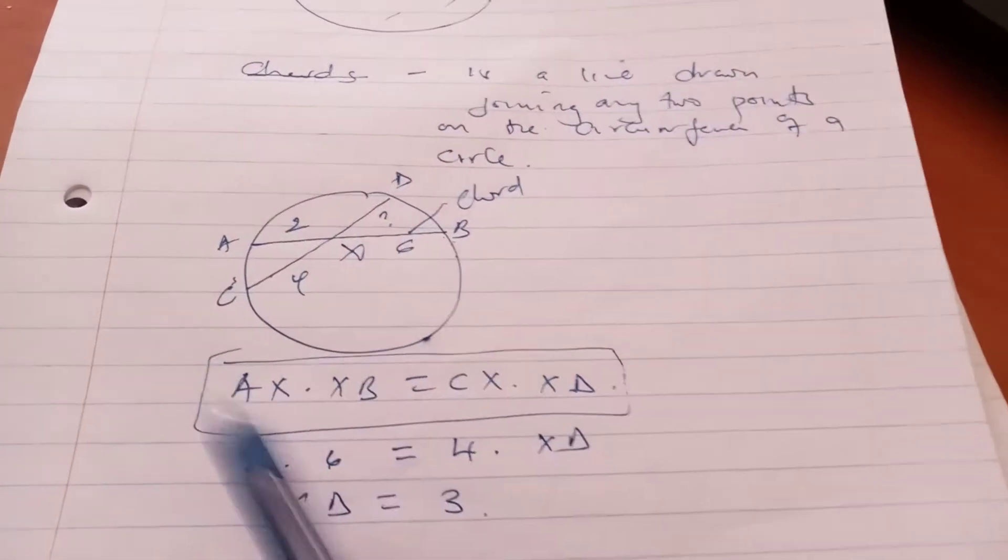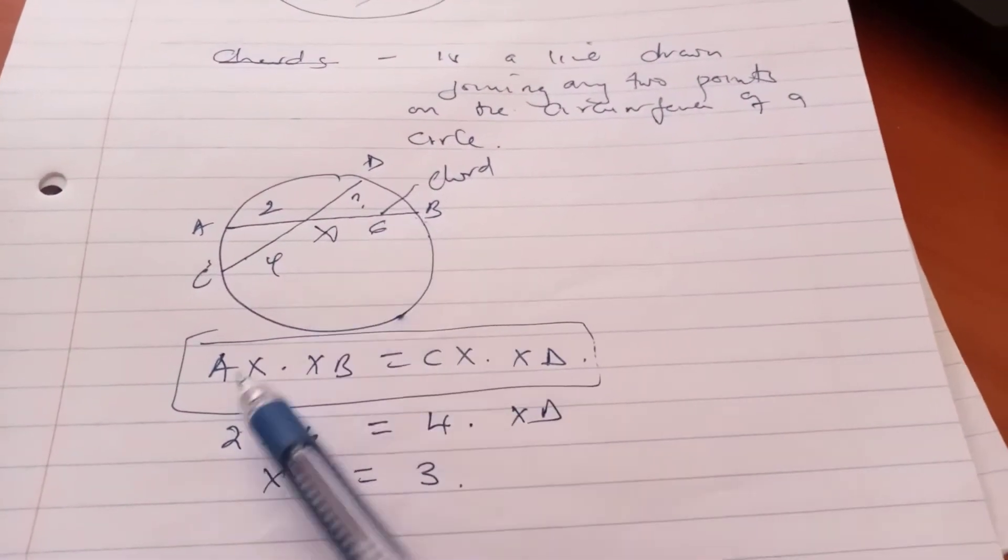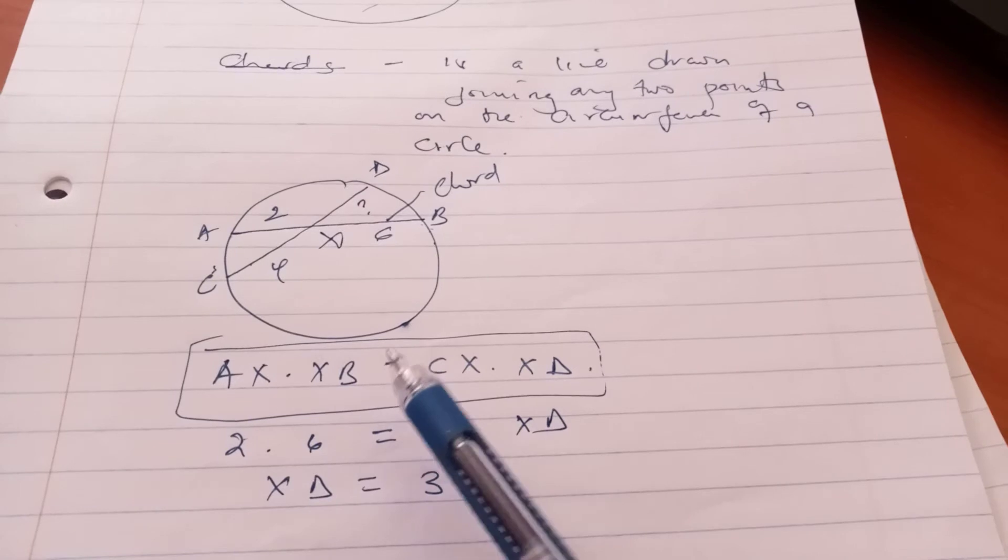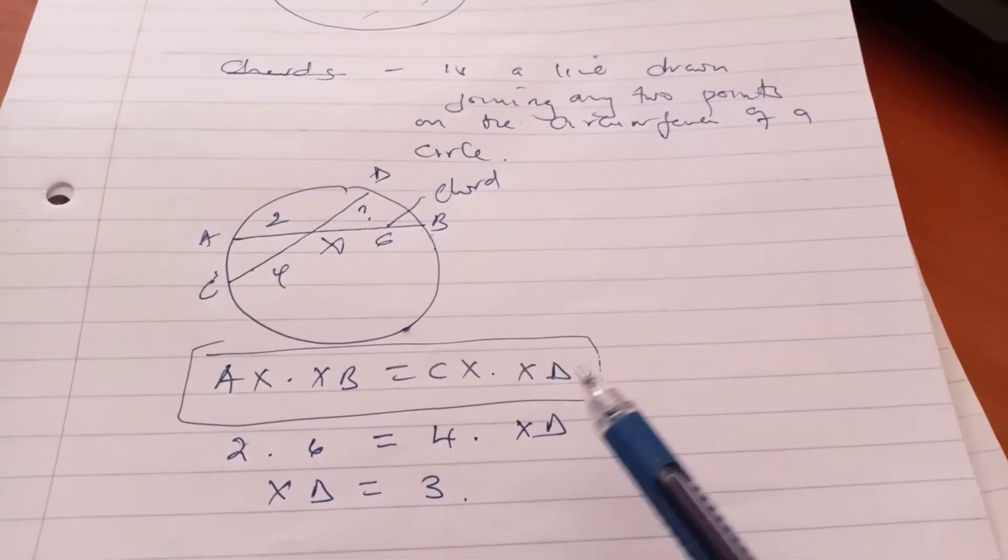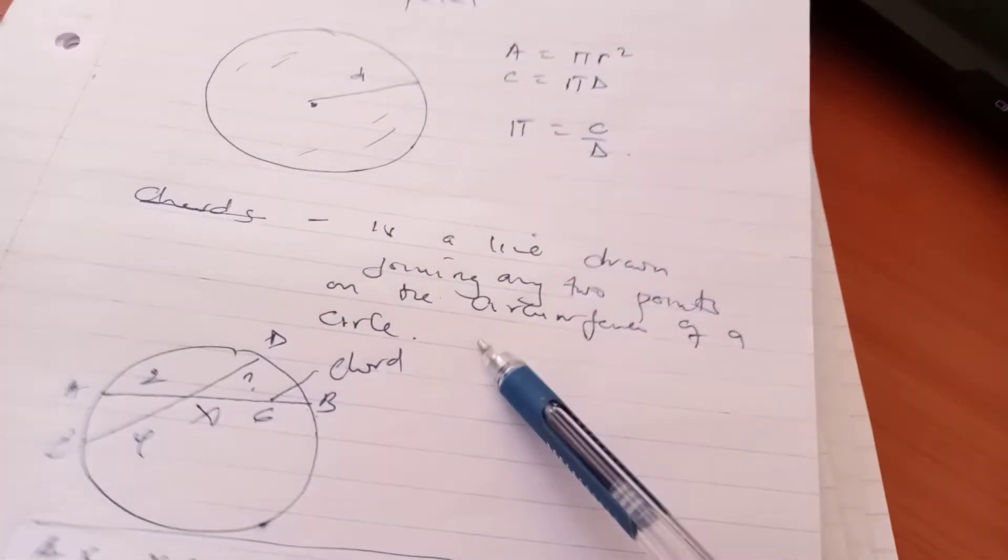So you can see that with this formula, you can determine any unknown, provided that you know the formula is AX·XB equals CX·XD. So that is for chords intersecting internally.